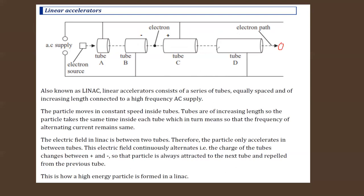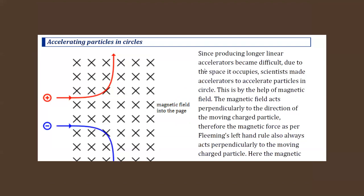The accelerated particle can then interact with a stationary or oppositely moving object, releasing energy and producing different particles of different mass. Whenever a charged particle moves, it produces a magnetic field. This magnetic field interacts with the magnetic field of a permanent magnet - the cross symbol means the field is directed into the page. To find the force on a charged particle, we use Fleming's left-hand rule.